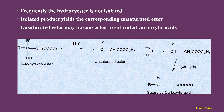As we have seen in the definition, in Reformatsky reaction, beta-hydroxy ester is not isolated frequently because the isolated product yields the corresponding unsaturated ester, and this unsaturated ester may be converted to saturated carboxylic acids. You can see the example: beta-hydroxy ester produced by Reformatsky reaction gives unsaturated ester by dehydration. This unsaturated ester containing a carbon-carbon double bond is subjected to hydrogenation. In this process, the double bond is saturated, and the product after hydrolysis gives saturated carboxylic acid.